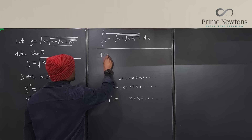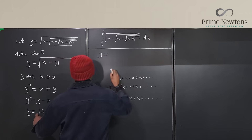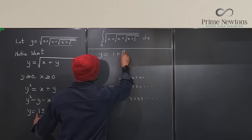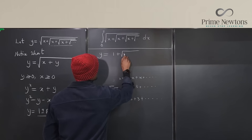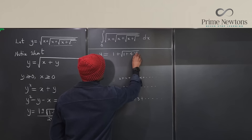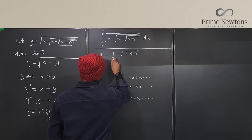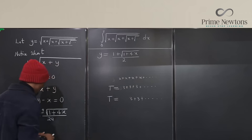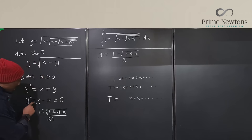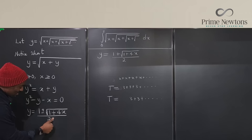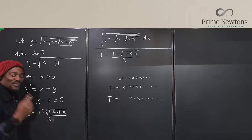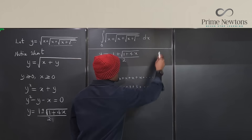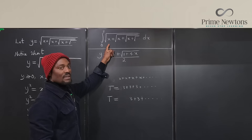So we take the positive option. Our function is y = (1 + √(1 + 4x)) / 2, where a = 1 so the denominator is 2. This is what we need to integrate.